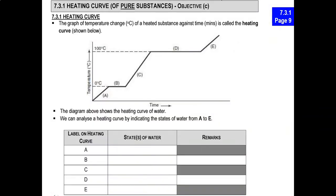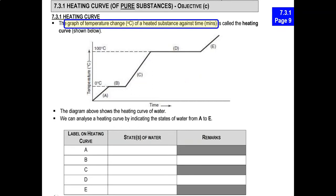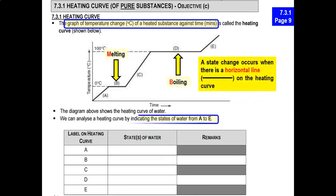Now let's look at the heating curve again. This diagram is found in your notes. As you can see, it is the graph of temperature against time. We need to look at some features on this graph. First, we need to identify the melting point and the boiling point.